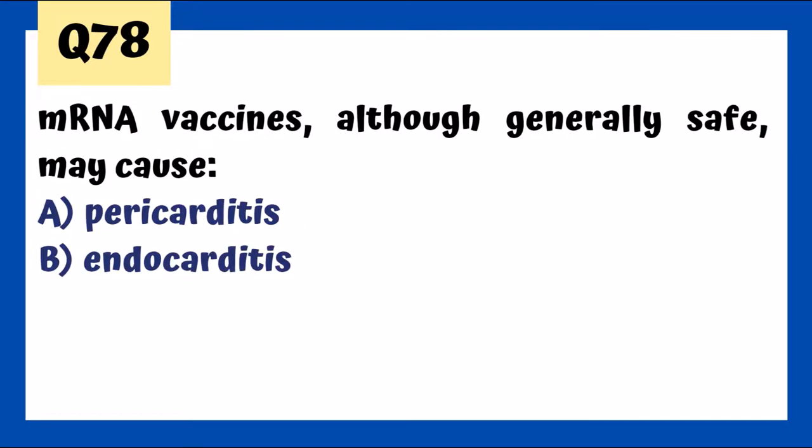mRNA vaccines — such as the COVID vaccine — although generally safe, may cause pericarditis and myocarditis as rare findings. This is something doctors should be aware of. PPSV23 is given to the elderly.